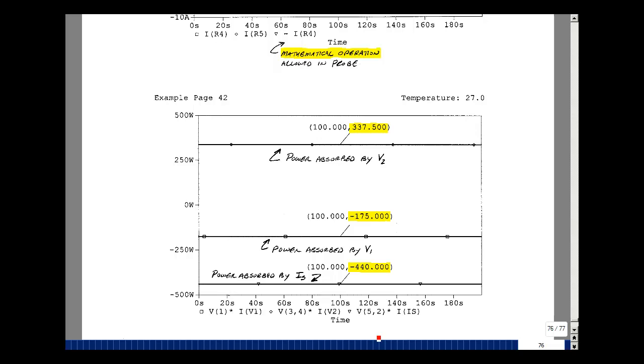My current source is hooked up between nodes 5 and 2, and the current is the current source. This would be the notation for absorbing power, shown here as minus 440 watts. So the current source is generating power. The voltage source V1 and the current source are both generating power, and voltage source V2 as well as the resistances are absorbing power.